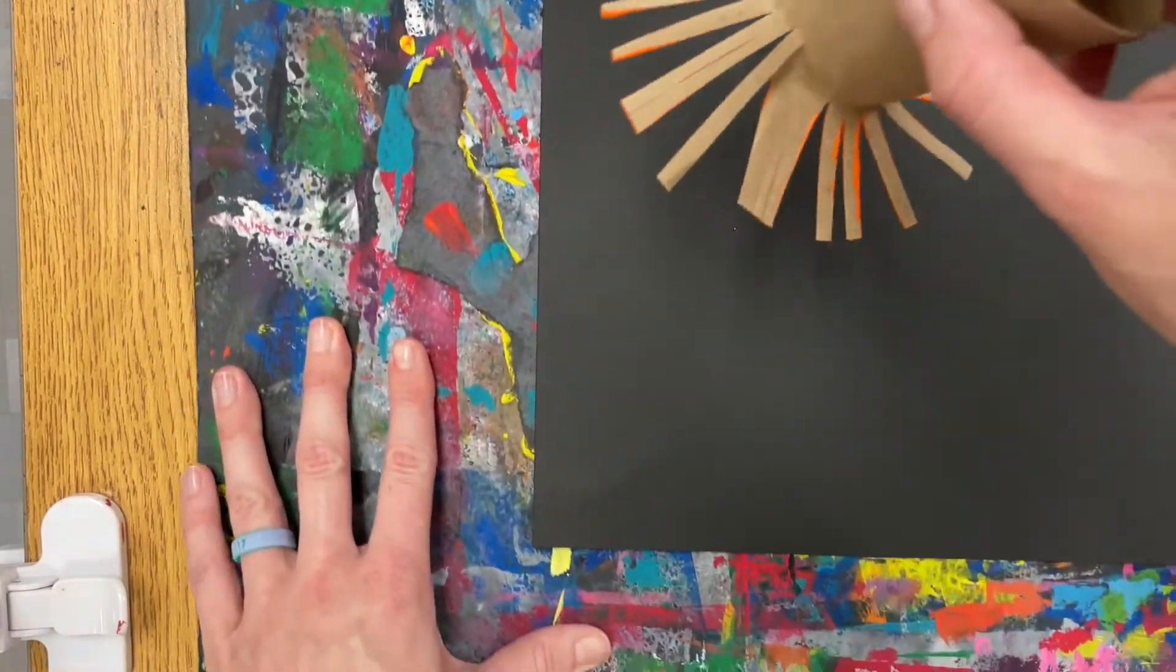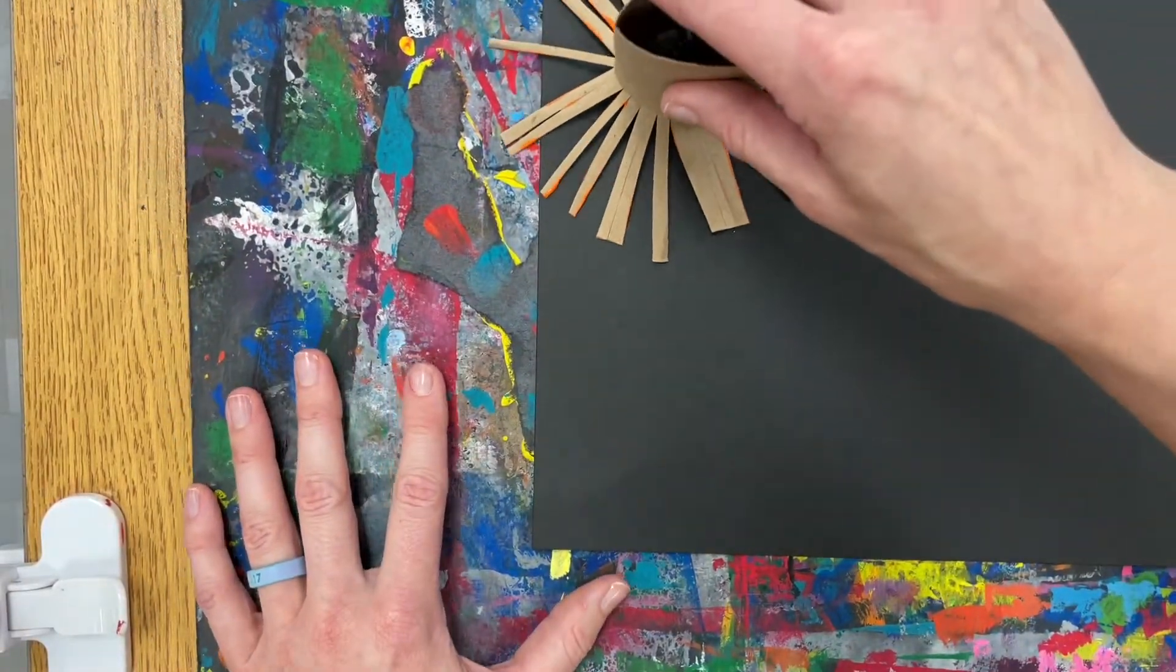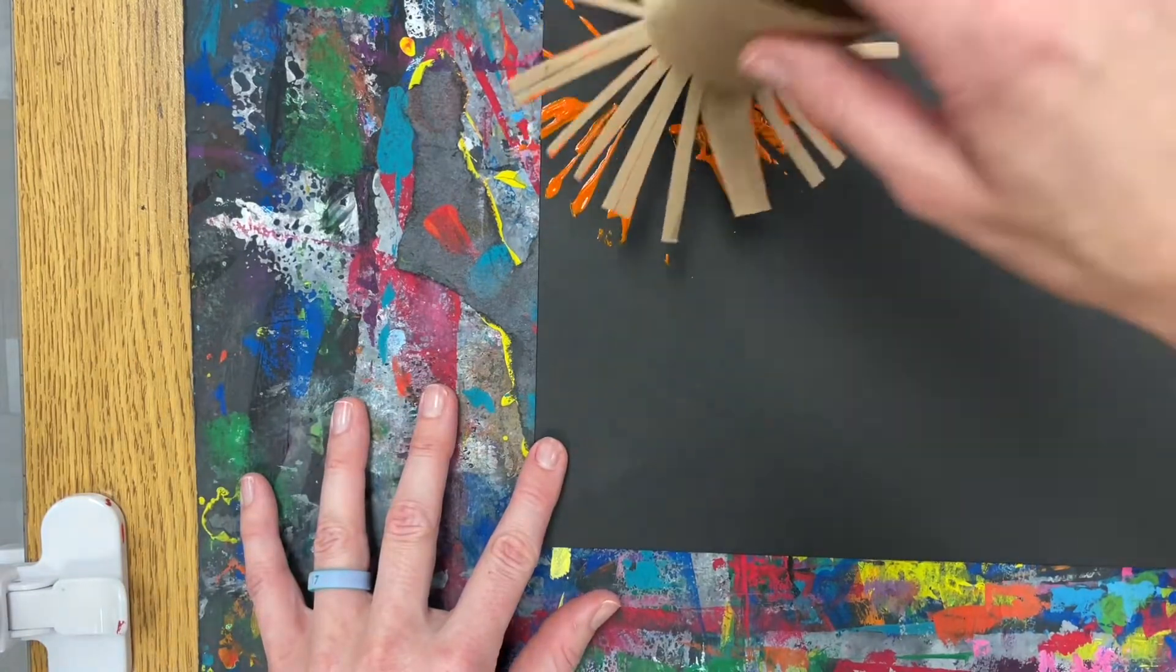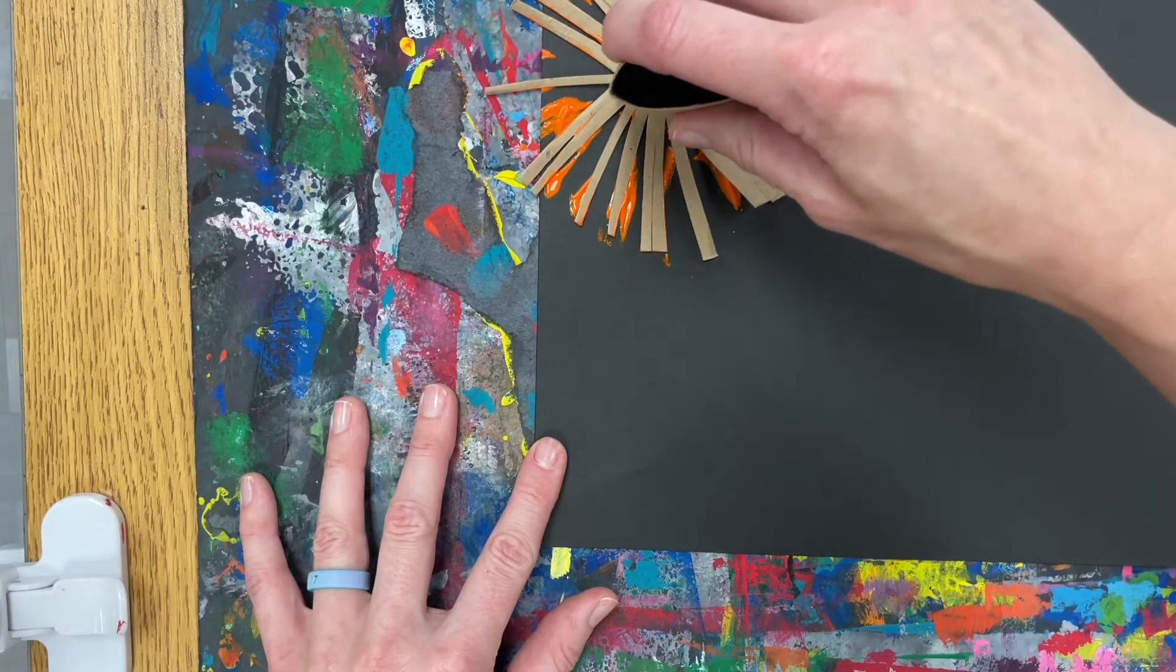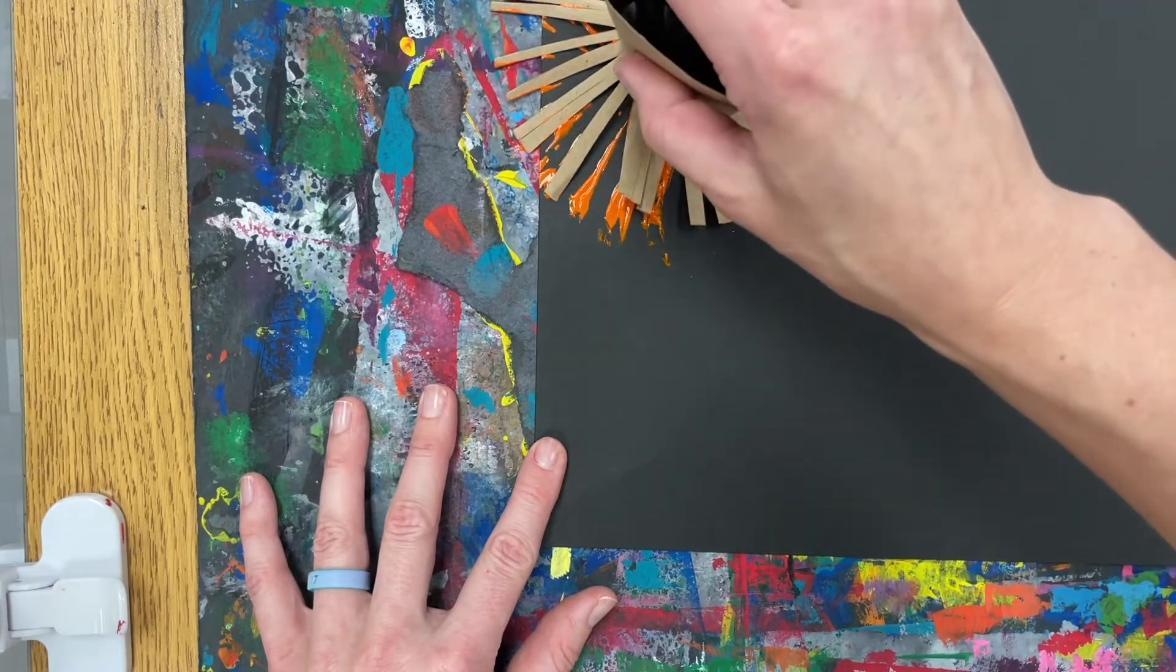When you add it to your paper, gently pat it around and turn it, slowly turn it so that you're keeping the middle part of your flower black.